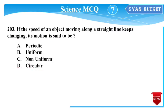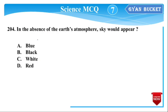Next question: If the speed of an object moving along a straight line keeps changing, its motion is said to be non-uniform motion.